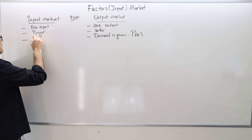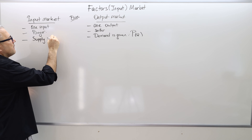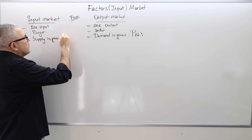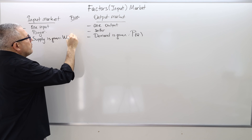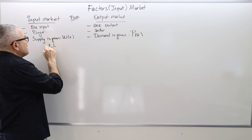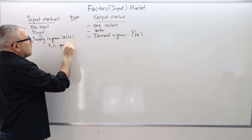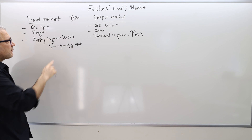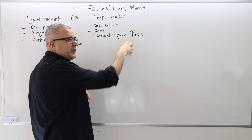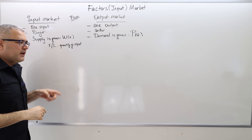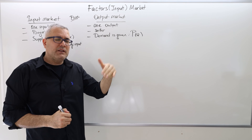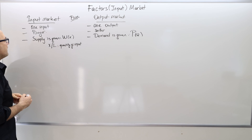The supply of the input — say labor — is given. I'm going to stick to the labor market as the input market. I'll denote the wage by W, and use X (sometimes L) as the notation for the quantity of input. W is the price of that input, the wage. The supply curve is upward sloping — an increasing function of X. So the more labor you want to hire, the higher the wage you must pay.